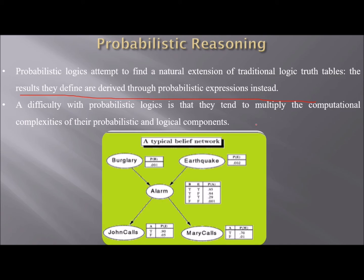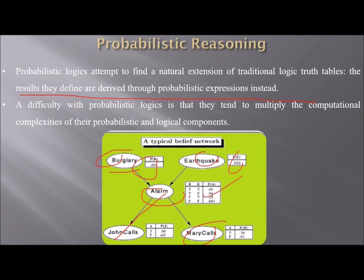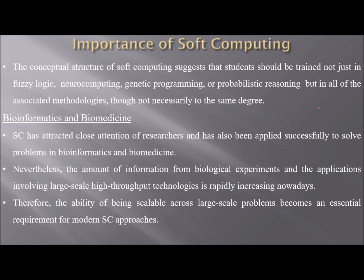For example, in a burglary scenario: if an alarm goes off, John calls; if an earthquake occurs, Mary calls. These are the probabilities and their various values — this is how probabilistic reasoning takes care of uncertainty. So what is the importance of soft computing? It is not software computing — it is soft computing.